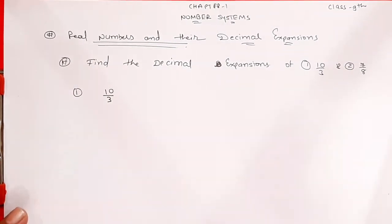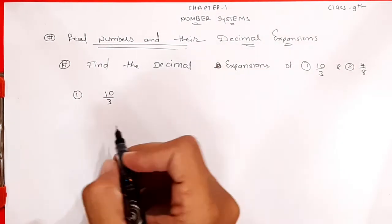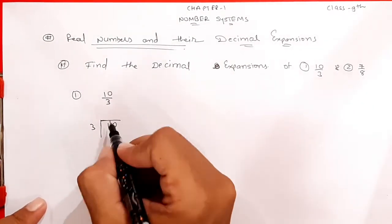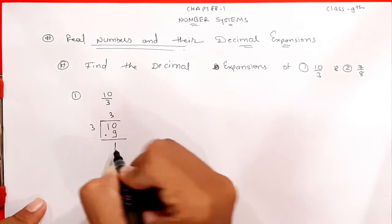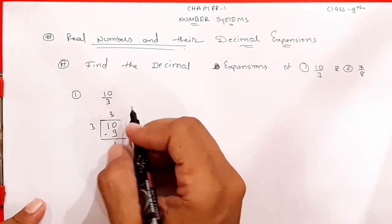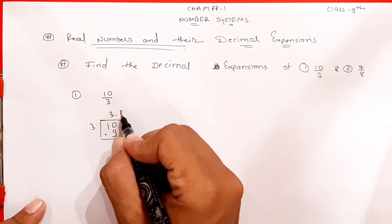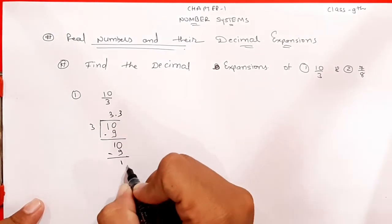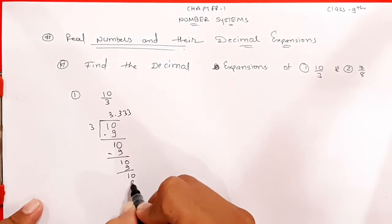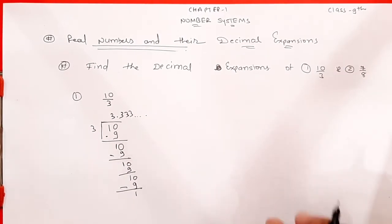Pehla question diya hai: 10 upon 3 — konse type ka decimal expansion hoga, woh dhundna hai. Toh yahan 10 ko 3 se divide karna hai. 3 threes are 9, dono ka minus karo toh 1 bachega. Ab 1, 3 se divide nahi ho sakta, toh point likhenge, 1 zero lagao. Again 3 threes are 9, remainder 1 — yeh process chalta hi rahega, koi end nahi.